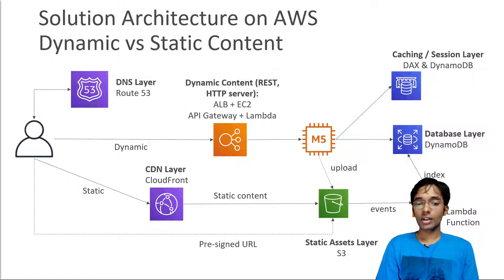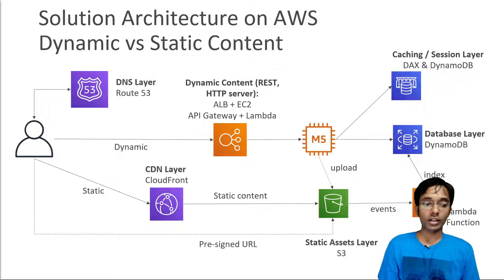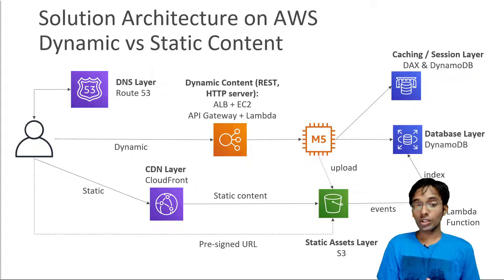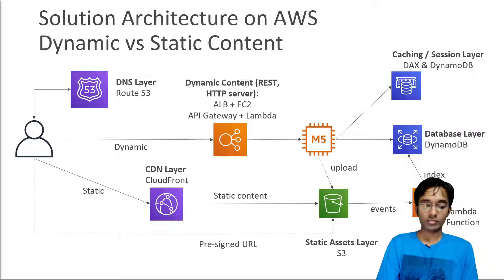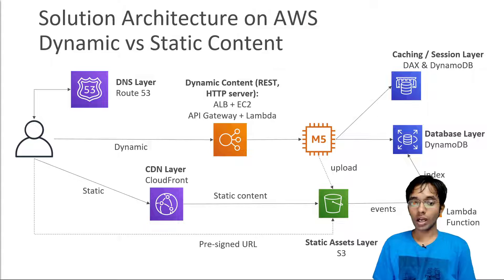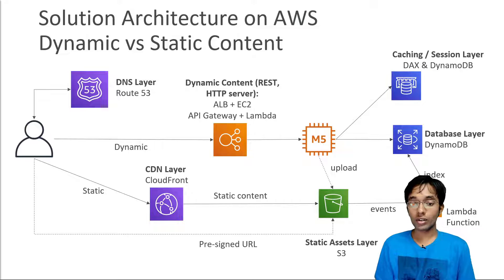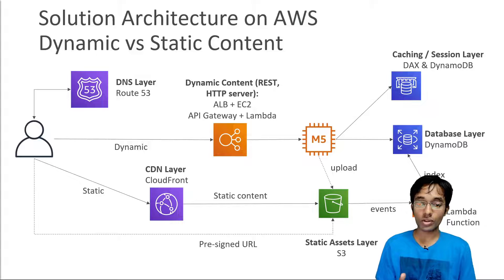Some best practices on Amazon S3: separate dynamic content from static content. If you make a DNS request to Route 53, you can be redirected to dynamic content — for example, your REST API or REST server. This could be an ALB with EC2, or API Gateway plus Lambda. The idea is that you get all dynamic content through this route, with little to no caching, getting access to fresh data.